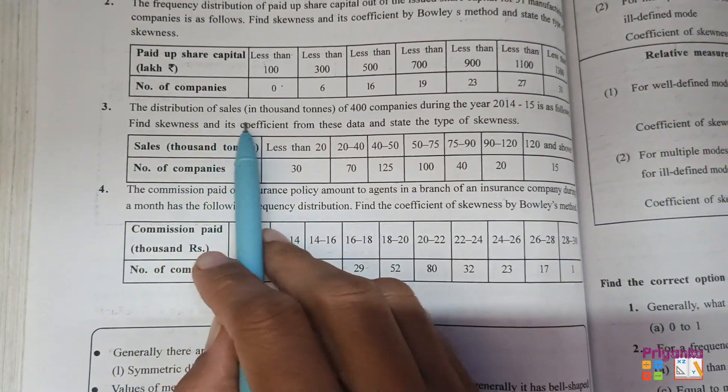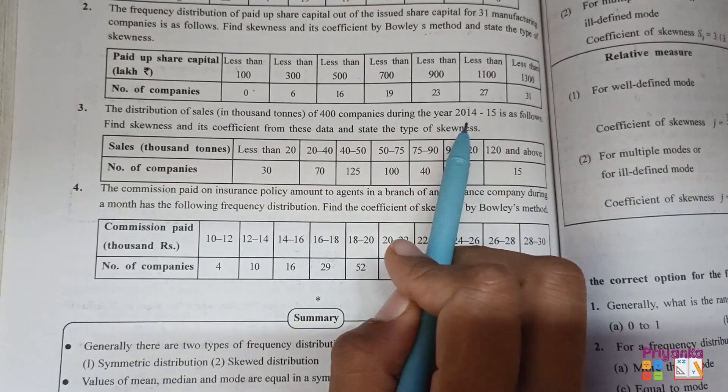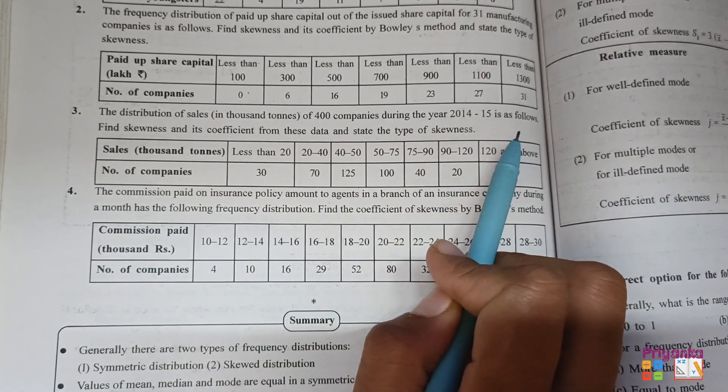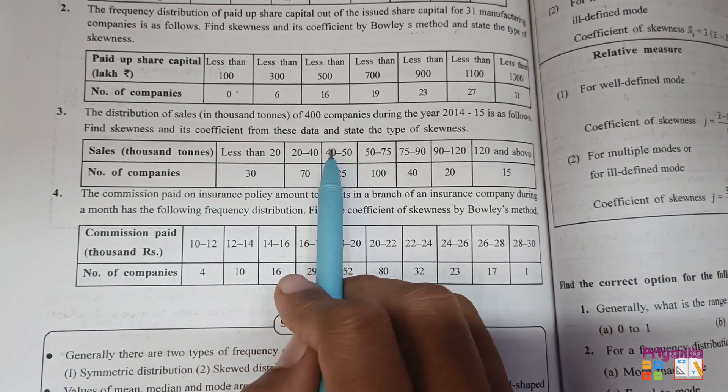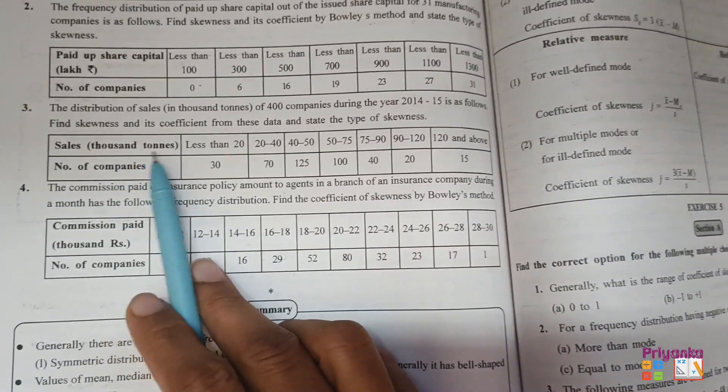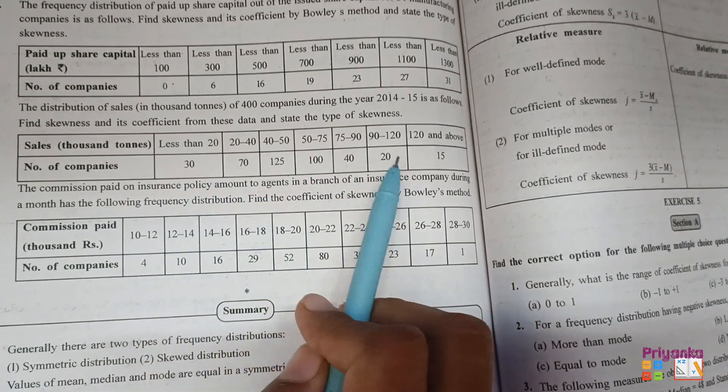Question 3. The distribution of sales in 1000 tons of 400 companies during the year 2014-15 is as follows. Find skewness and its coefficient from the data and state the types of skewness. Here we can see the observation. The first only given is less than 20, the remaining is normal.